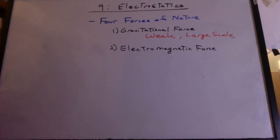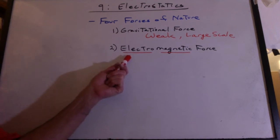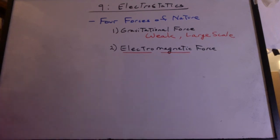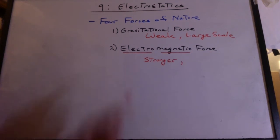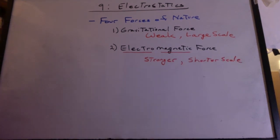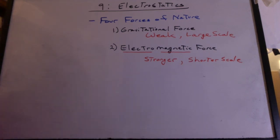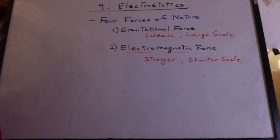Next we have the electromagnetic force. It has two parts: we're going to study the electrostatic part, and the magnetic force we'll study later. They used to be considered two separate forces, but scientists have found a way to relate the two. It's stronger than gravity, but we notice it on a shorter scale. You were able to see this force in your electrostatics demonstrations — right in our laboratory. It's also the force that causes chemical bonding. The electron is negative, the proton is positive, so this is what helps hold the atom together and form bonds.